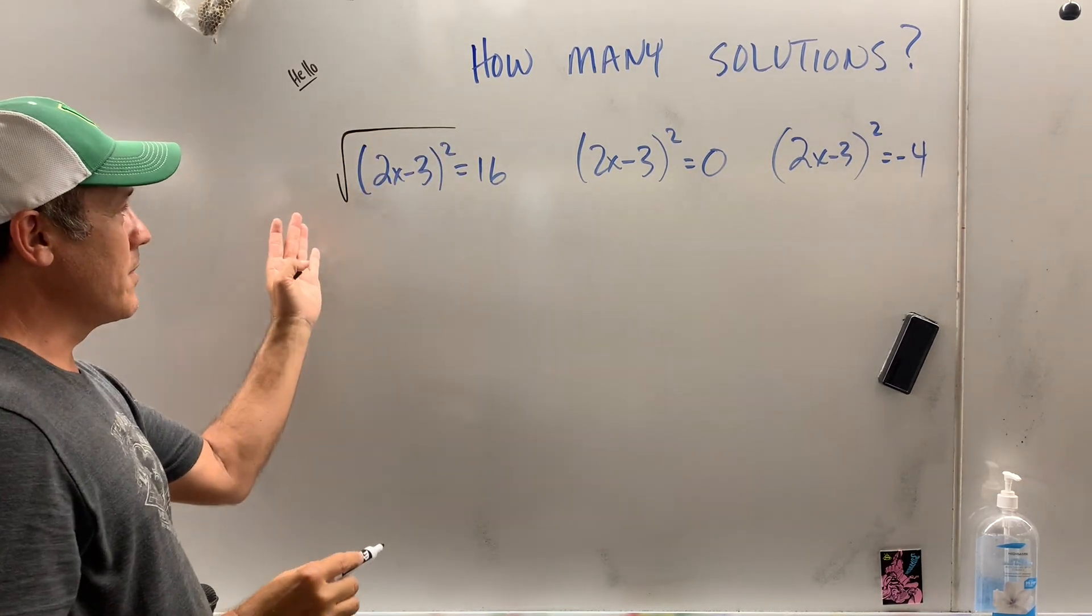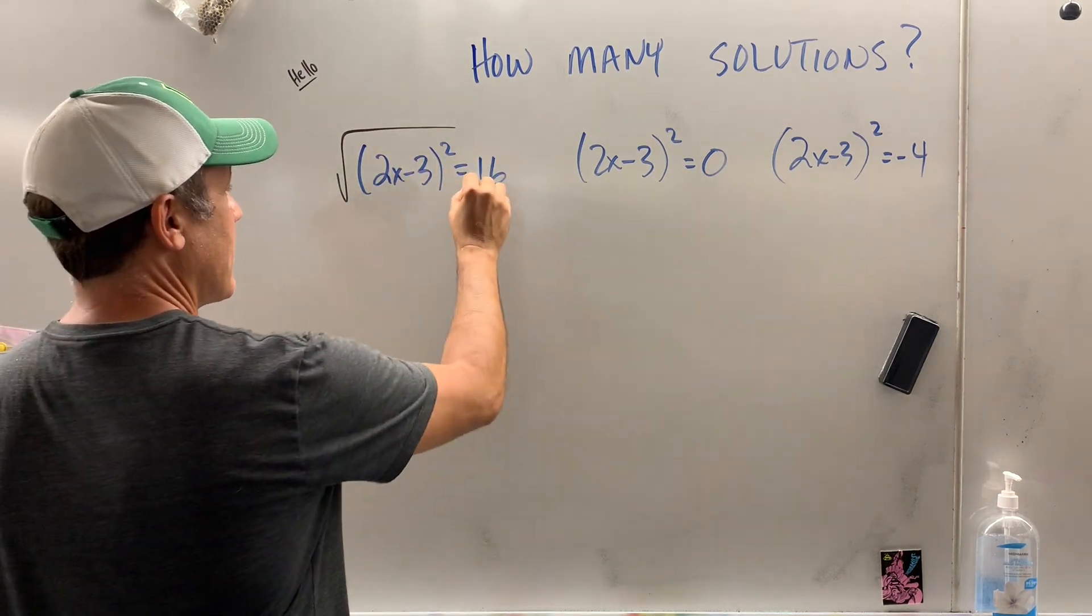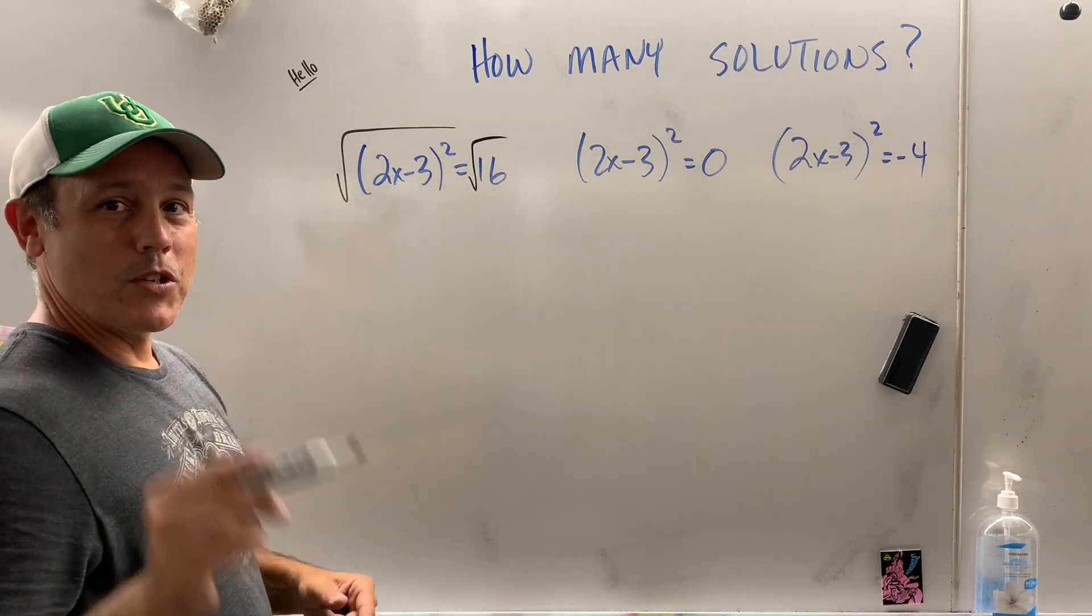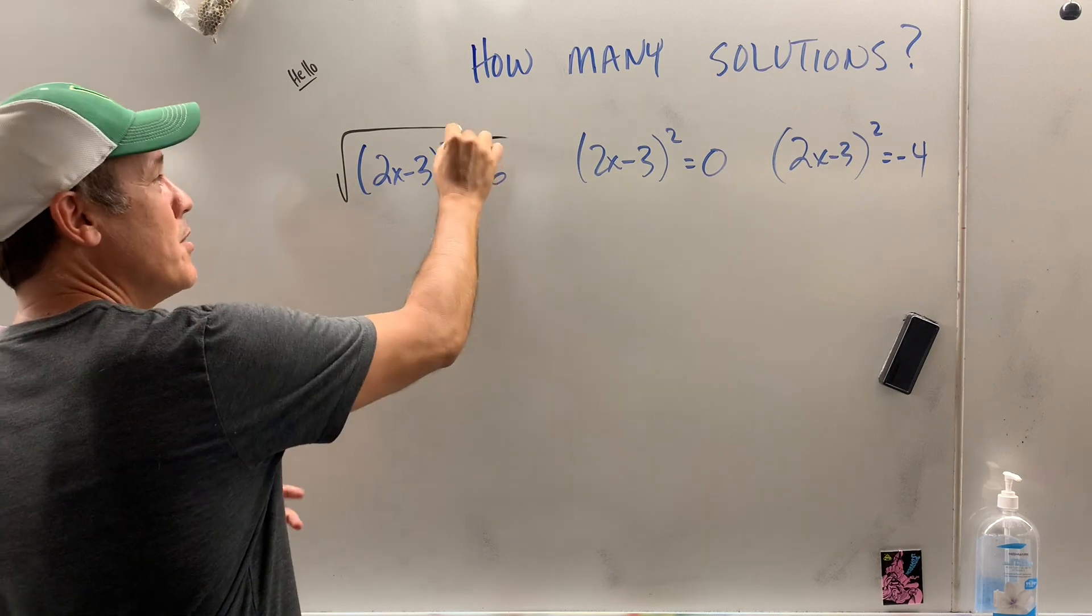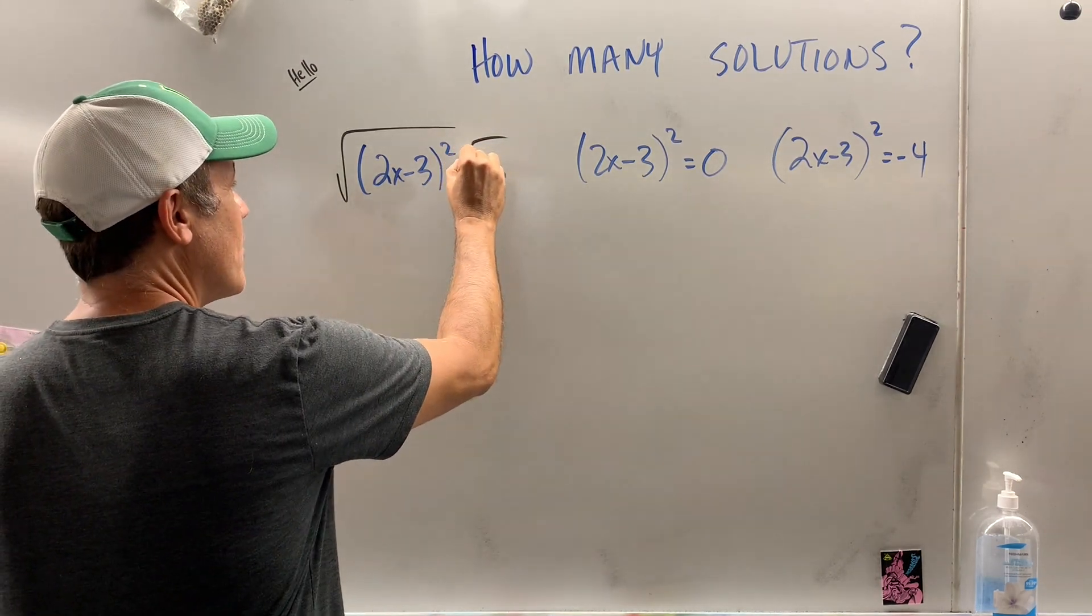You take the square root. If you take the square root of the left side of the equal sign, you got to take the square root of the right side. Now, keep this in mind. When you are the one who is physically putting the square root around a number, it's plus or minus.